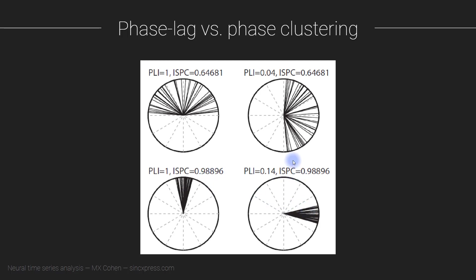The ISPC is very close to one for the first two cases, and lower for the other two cases — still a respectable strength of clustering, but lower. It's 0.64 in both of those cases. That is not surprising, because this is a measure of the clustering of phase angles, and the clustering is exactly the same in each respective pair.